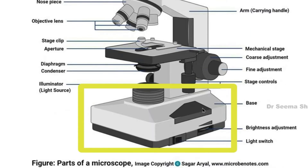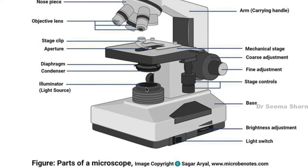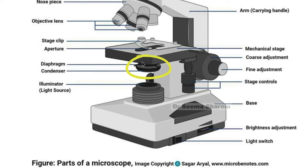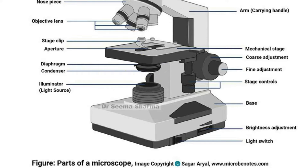Base. In the base, there is a luminator. Beneath the stage, diaphragm and condenser — two things are there for increasing or decreasing the source of light.